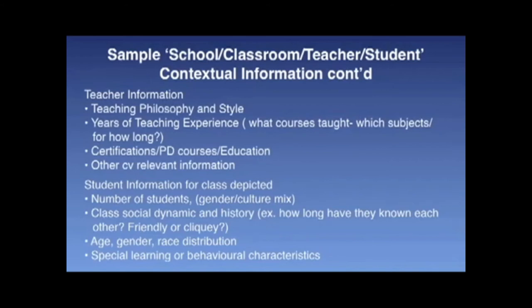Student information for the class depicted might include number of students, their gender, their cultural mix, the class social dynamic and history — in other words, how long have they known each other, are they friendly or are they cliquey? Other information: age, gender, race distribution, special learning and/or behavioral characteristics of the group or individuals within the group, etc. So I hope you get a sense of the kind of information that should be included on page 2 of a PBLO.